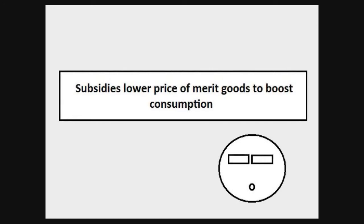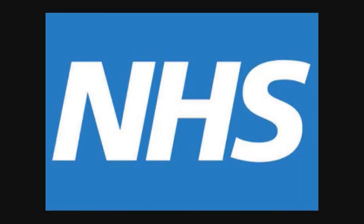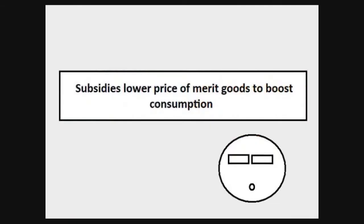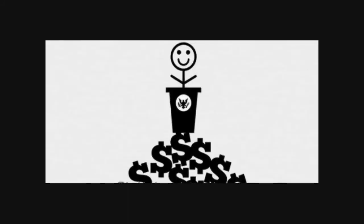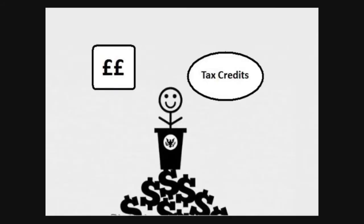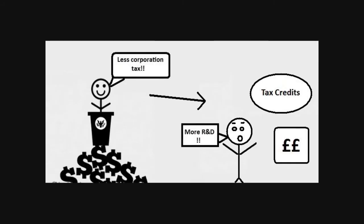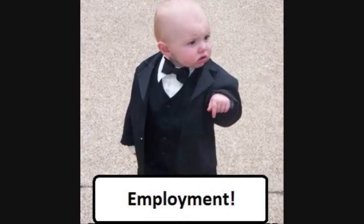Subsidies to consumers will lower the price of merit goods. They are designed to boost consumption and output of products with positive externalities. The government may offer financial assistance such as tax credits for business investment in research and development, or a reduction in corporation tax, which is a tax on company profits, designed to promote new capital investment and extra employment.